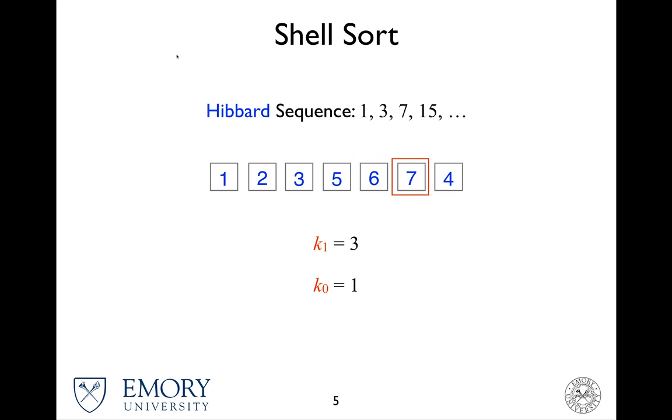6 and 5, you're good. 7 and 6, you're good. 4 and 7, now 7 is greater, so you do the swap. Again, 6 is greater than 4, so you do the swap again. 5 again, and now everything is in order, so you stop.